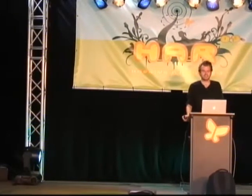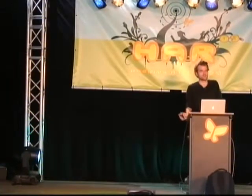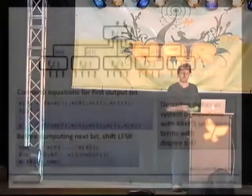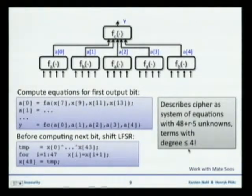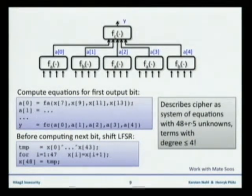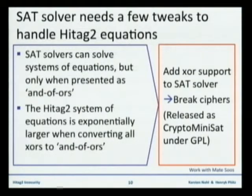So we have a cipher that's easily described with very low degree equations. On this slide, the only number that matters is the 4: we can describe this entire cipher with terms of degree 4 or less. With a 48-bit key we'd want degree up to 48 to fully use the key's potential, but this cipher reaches only degree 4 — so we can easily break it. Everything up to degree 7 is almost trivial.